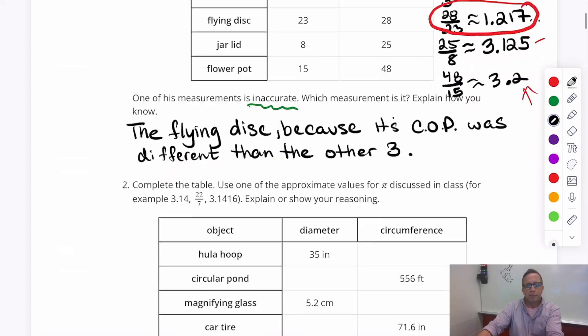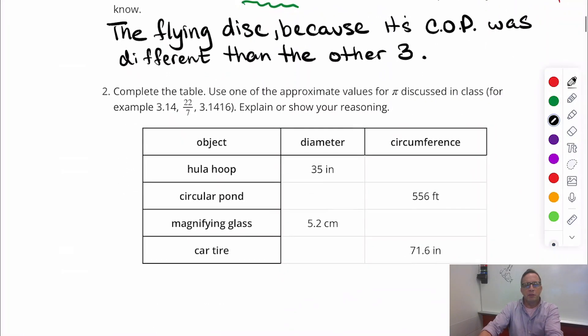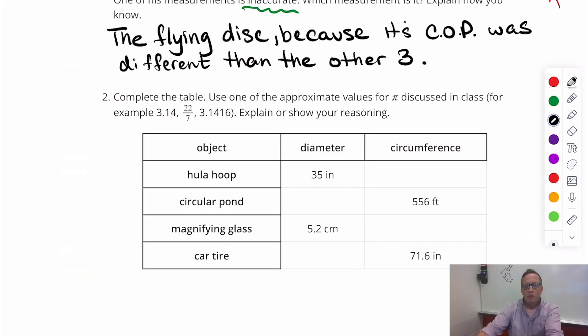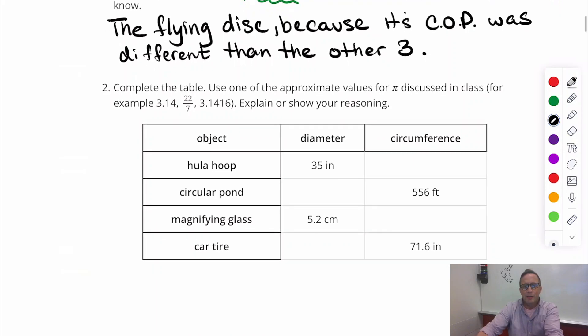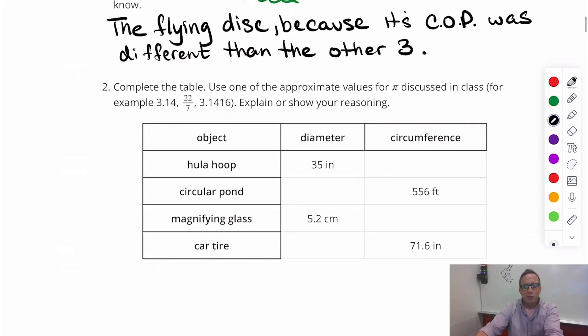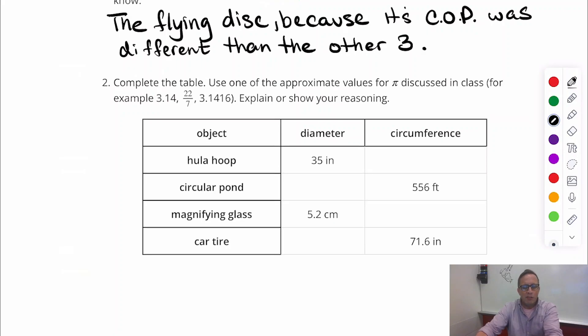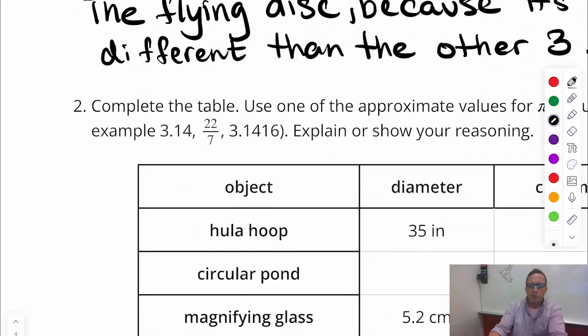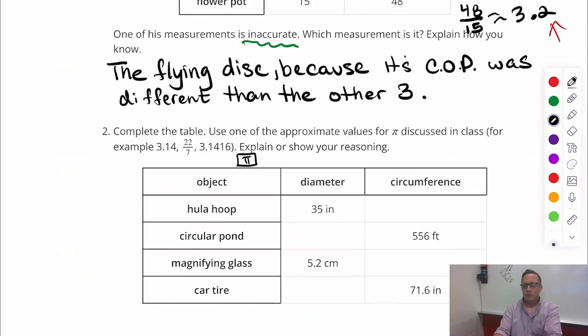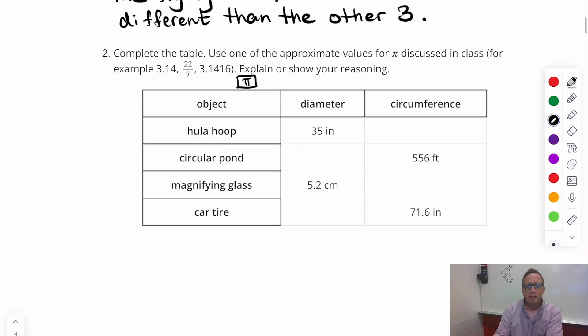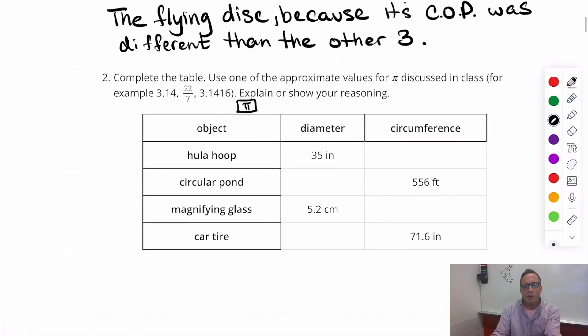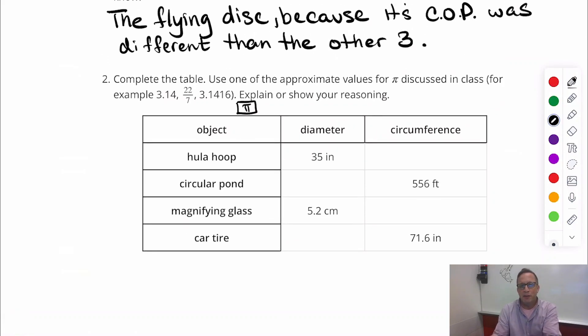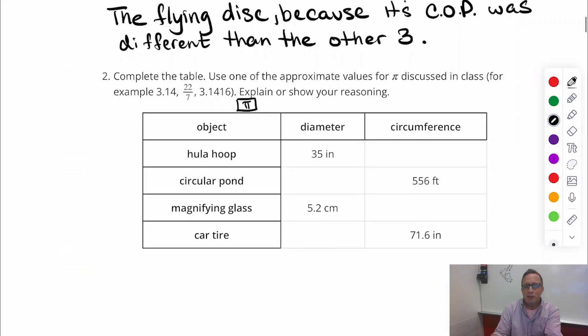Alright. For number two. Complete the table. Use one of the approximate values for pi discussed in class. Alright. So, for example, we can use 3.14. We can use 22 sevenths. We can use 3.14159. You can also, on your calculators, you have a pi button that gives you pi. So it really doesn't matter. Or you can just keep it in terms of pi as well.